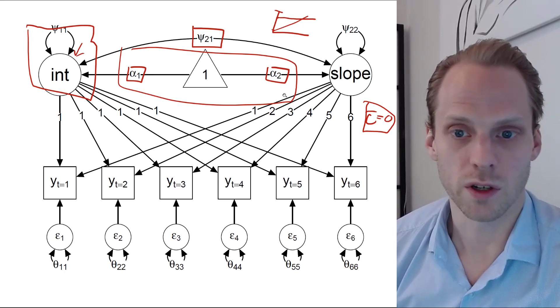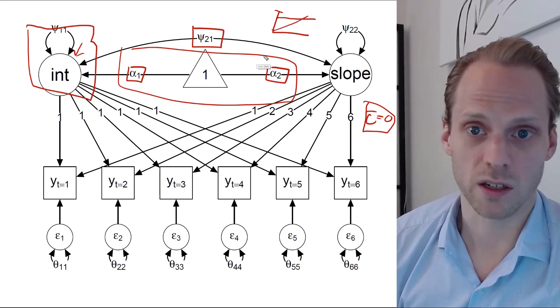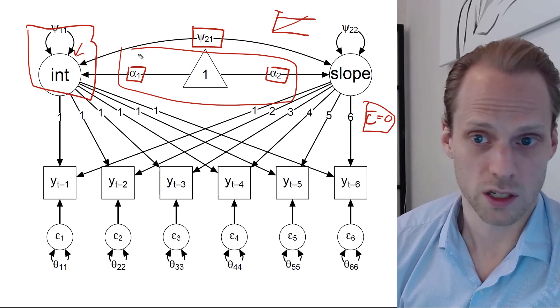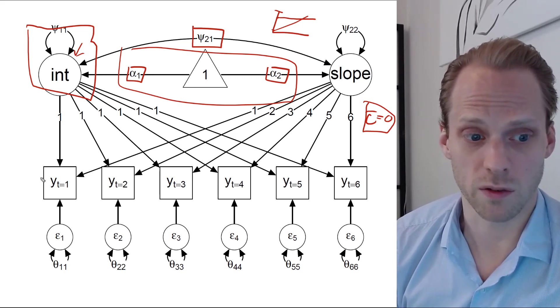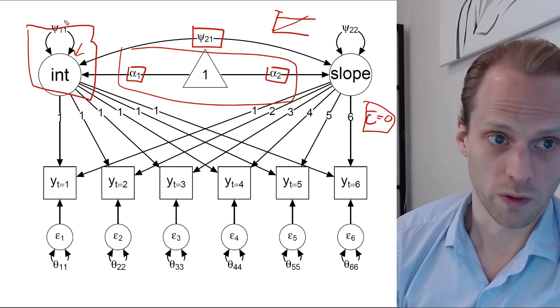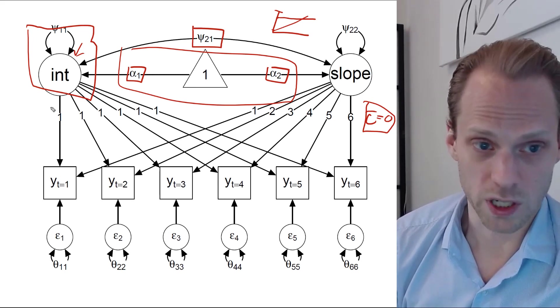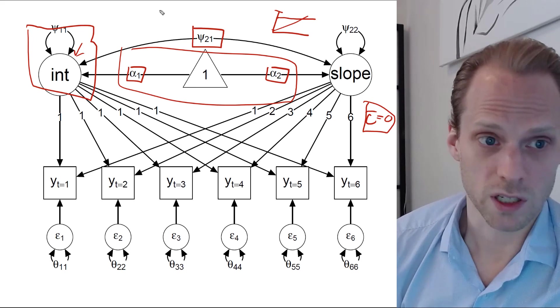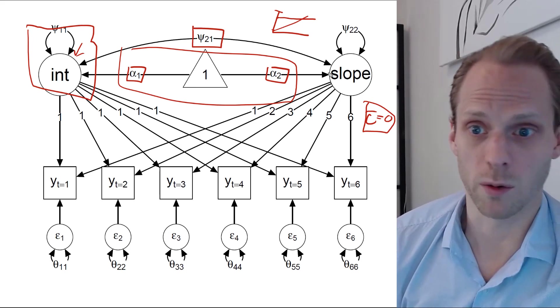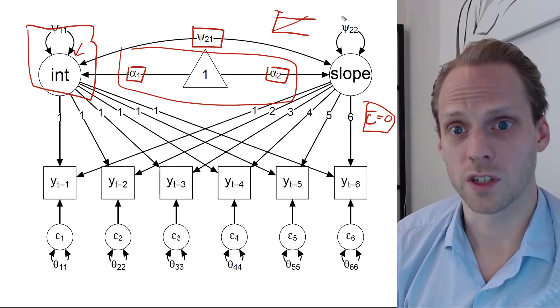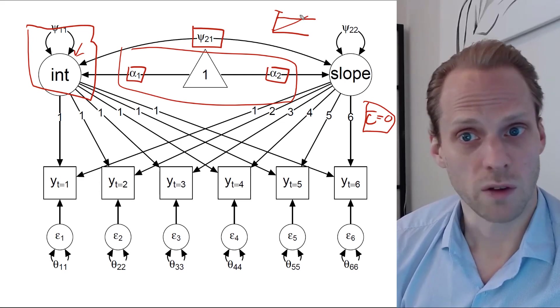Another thing we can do with this is we could combine this with a second variable that we're interested in. So instead of having y, we could also have x. Then we have another latent growth model for the second variable. And then we can actually model correlations between the intercept of the first variable and the intercept of the second variable, and the slope of the first variable and the slope of the second variable.